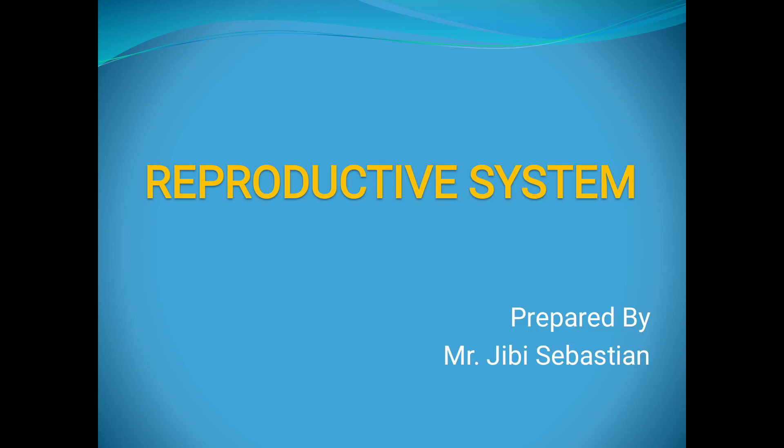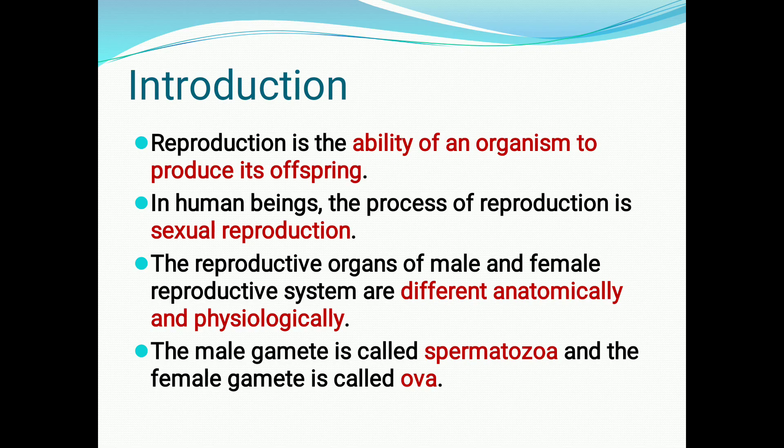Let's discuss the reproductive system. Reproduction is the ability of an organism to produce its offspring. In human beings, the process of reproduction is sexual reproduction. The reproductive organs of the male and female are different, both anatomically and physiologically.